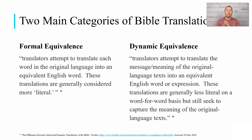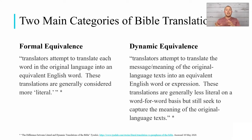The second form is dynamic equivalence. This is where the translators attempt to translate the message or the meaning of the original language text into an equivalent English word or expression. These translations are generally less literal on a word-for-word basis, but still seek to capture the meaning of the original text. Here they're not concerned with matching one Greek word to one English word — it's more of a thought-for-thought translation, taking the meaning behind the Greek sentence and translating it so that we, as English readers in the 21st century, can understand it.